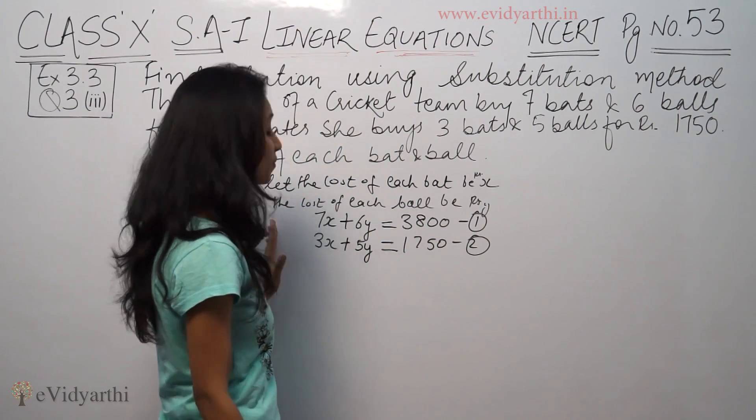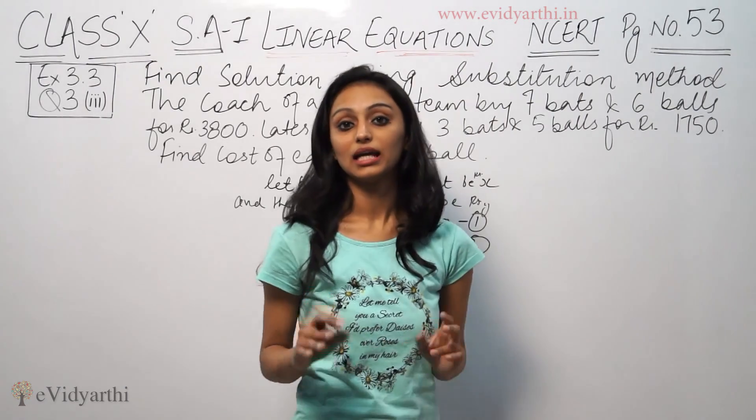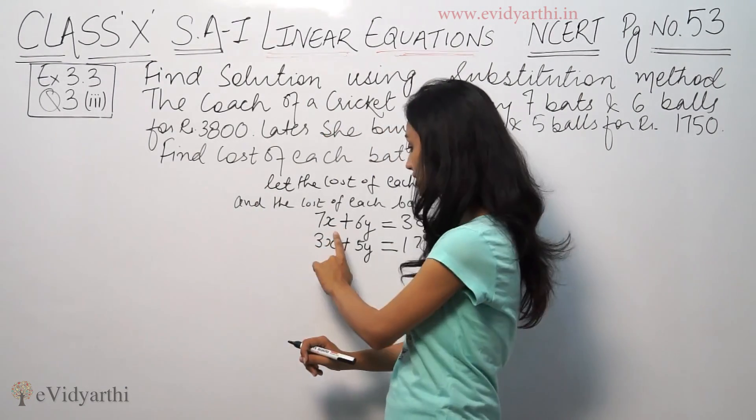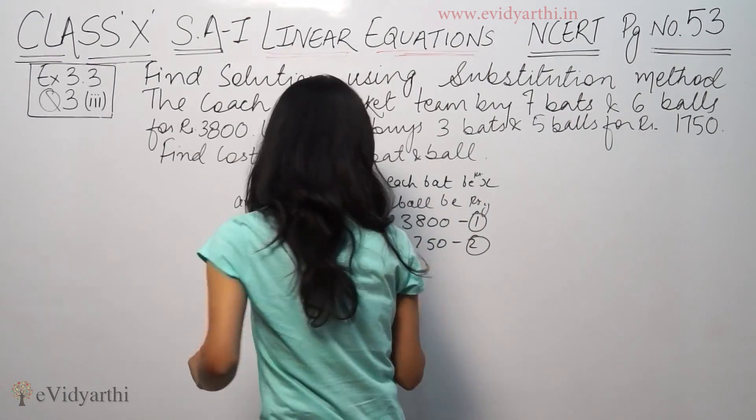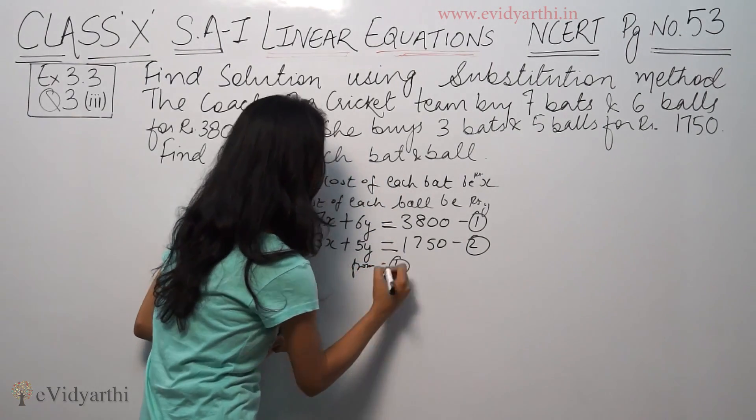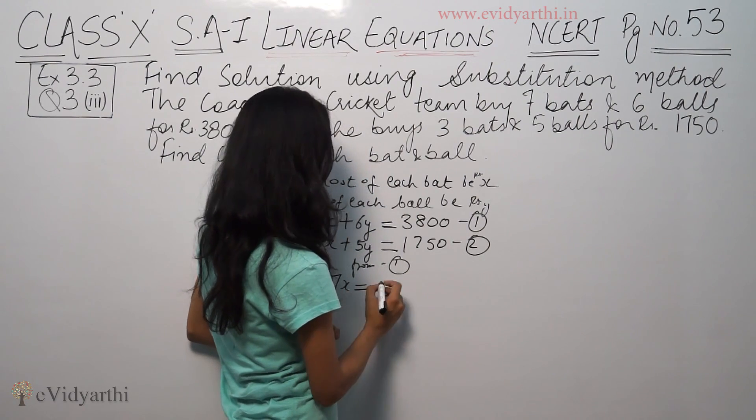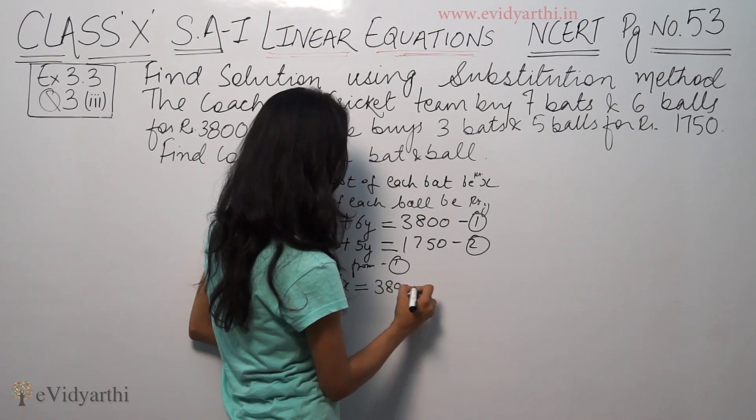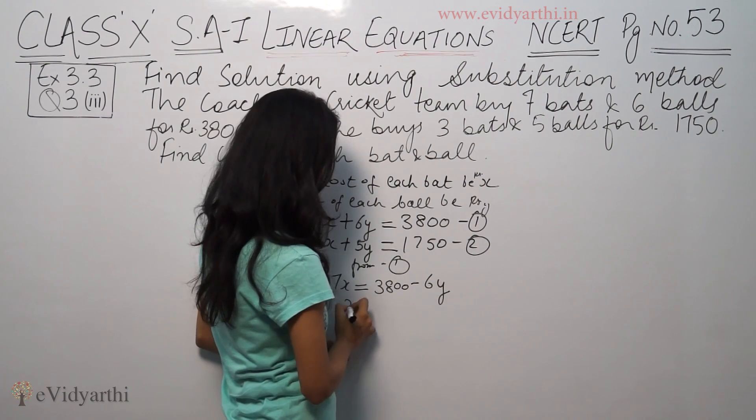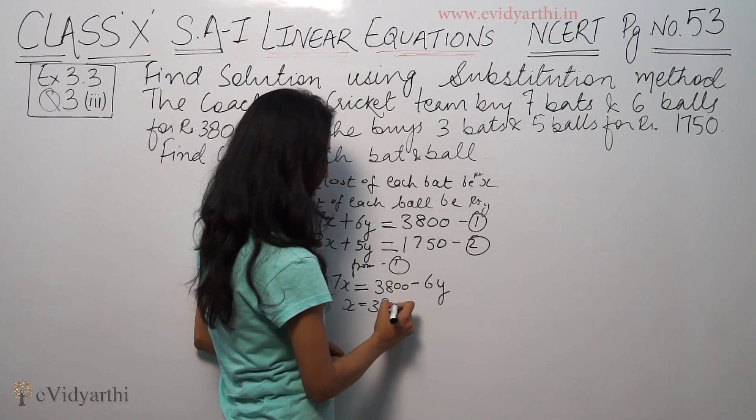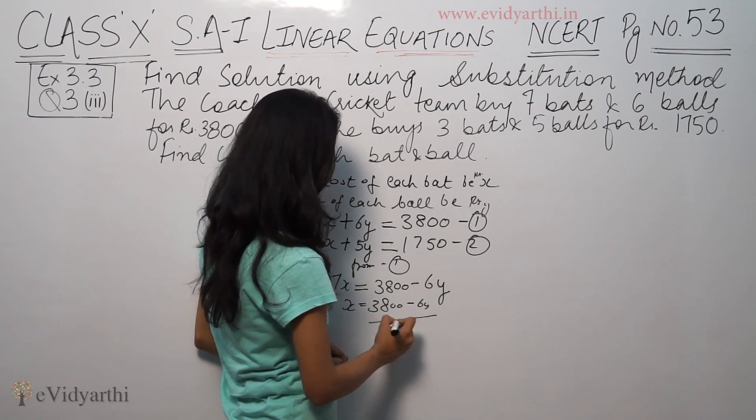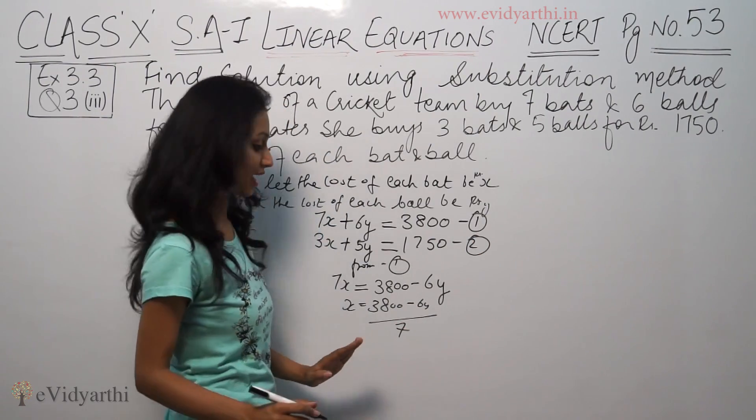Now I'm going to use the substitution method. I'm going to take equation 1 and solve for x. From the first equation, 7x equals 3800 minus 6y. So x equals (3800 minus 6y) divided by 7.